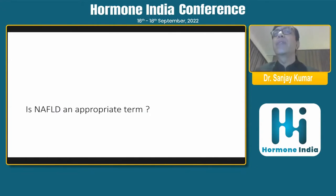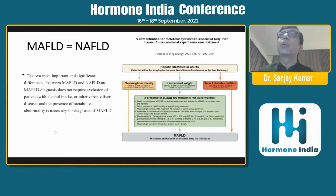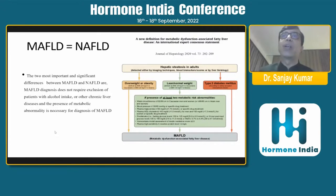An interesting question is whether NAFLD is an appropriate term. It is a negative term — 'non-alcoholic fatty liver disease.' An expert panel consensus in 2020, published in the Journal of Hepatology, suggested we should now call it MAFLD — metabolic dysfunction-associated fatty liver disease. The key difference is that MAFLD would include even patients who consume alcohol but otherwise fit criteria of metabolic syndrome, such as hypertension, diabetes, hyperlipidemia, and obesity, since their liver disease may not always be related solely to alcohol.